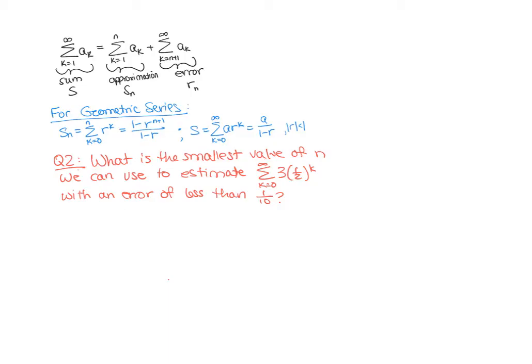Now a similar question that we can look at when we are considering approximating a sum S by a partial sum S of n plus an error r n is we can ask ourselves what is the smallest value we can use for n to keep our error below a certain boundary. This question is a little bit more complicated. We're looking at the same sum, sum k goes from zero to infinity of three times one half to the k, which is still a geometric series, but now we are being asked what is the smallest value of n we can use to estimate this sum with an error of less than one tenth.